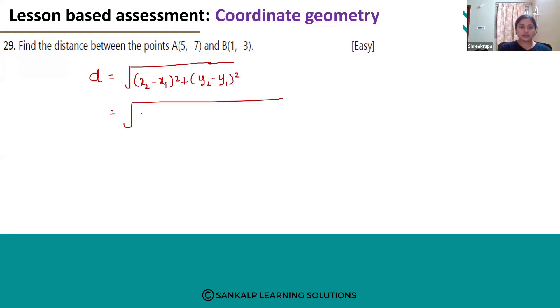x₂ is 1 and x₁ is 5 whole square plus y₂ is -3 minus y₁ is -7. So it is -3 minus -7 whole square.